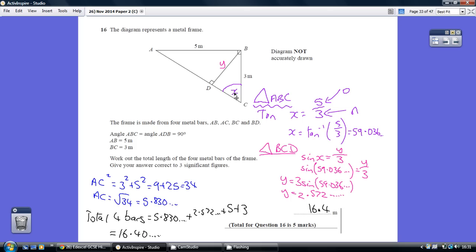So now we're basically doing sine. We're doing sine because we've got opposite and hypotenuse. So sine x is opposite over hypotenuse, y over 3. But we've just worked out the angle to be 59.